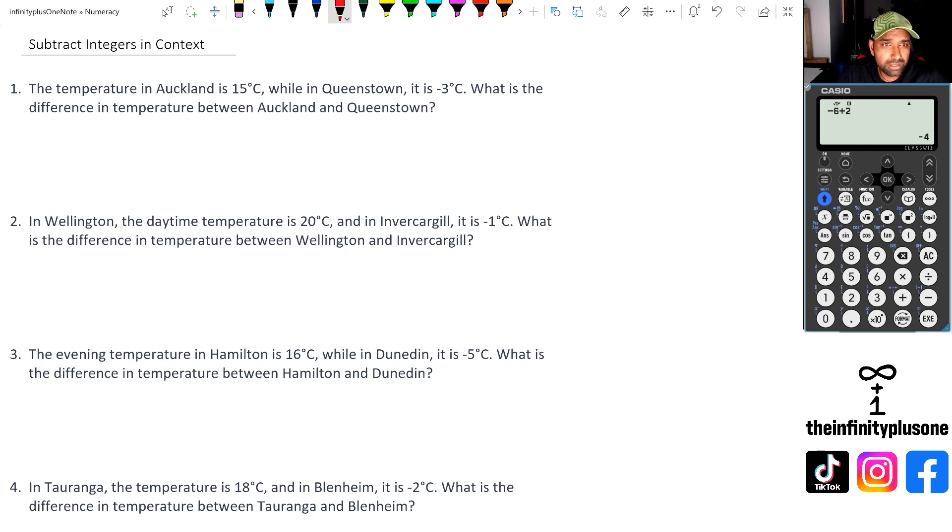Question one, what we've got here is Auckland has got 15 degrees and Queenstown is minus 3 degrees. What's the difference in temperature between Auckland and Queenstown? So what we're going to do is we are trying to find the difference between the two numbers. So it's kind of natural in your head to go 15 minus 3, it's actually 12 degrees difference between the two cities.